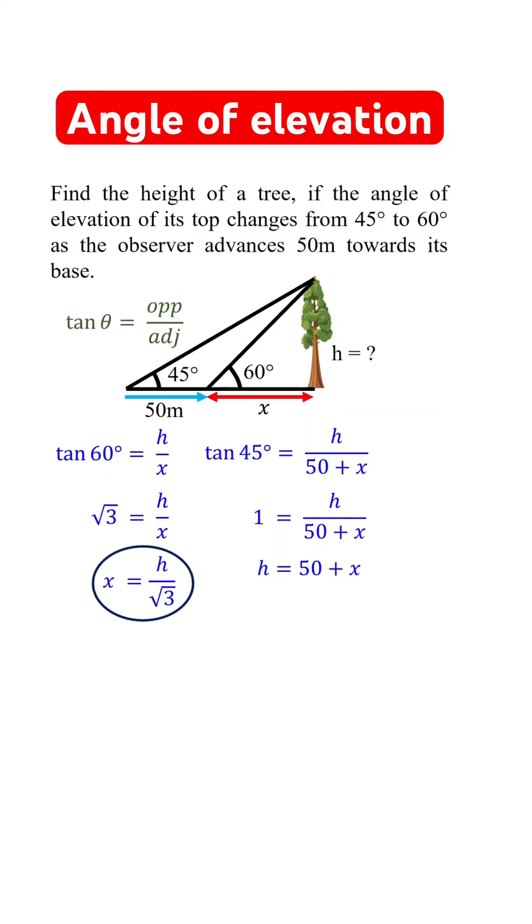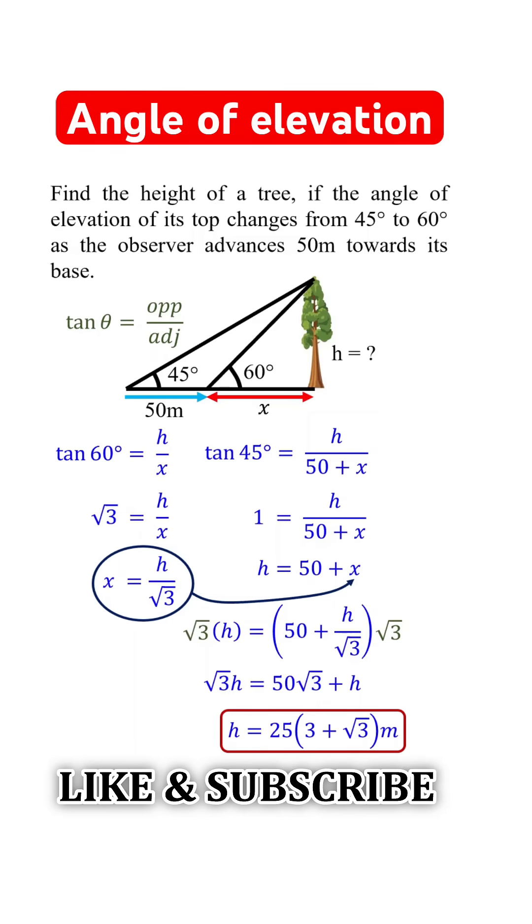Now substitute x with h over square root of 3. Then multiply both sides with square root of 3 to get rid of the fraction. From this, h equals 25 times 3 plus square root of 3 meters.